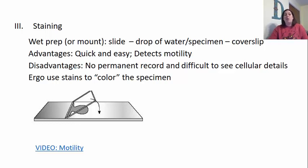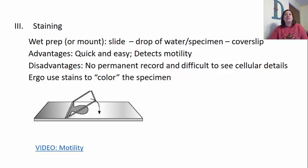There are some disadvantages to a wet prep or wet mount. There's no permanent record — when you get done viewing and clean off the slide, the organism is gone. It's also very difficult to see detailed structures because they're not stained, making it hard to see the internal structures of these organisms. This is why a lot of times we need to add color to specimens, and a stain may need to be used to actually see organisms in more detail.